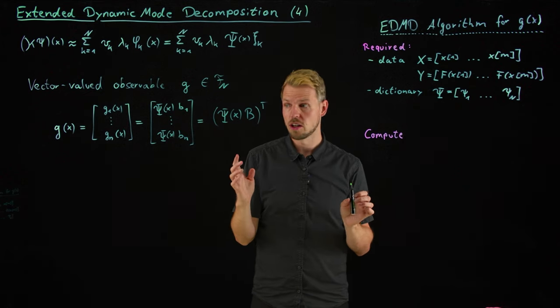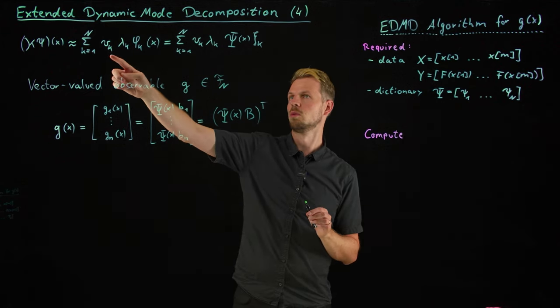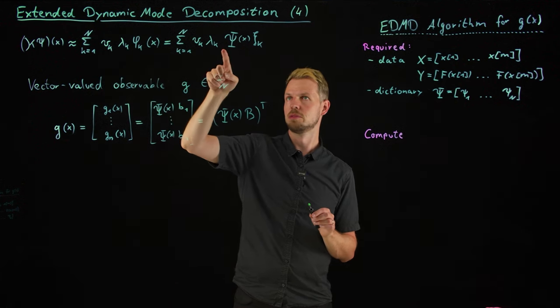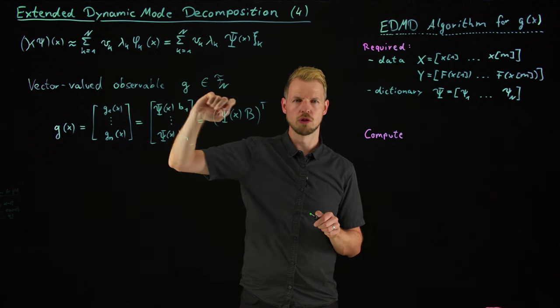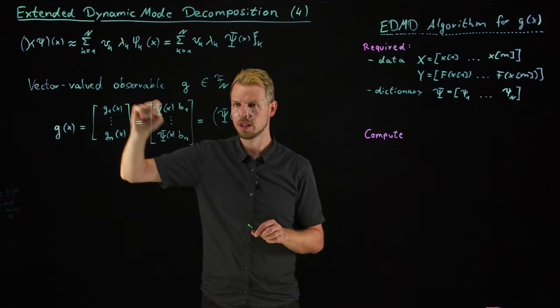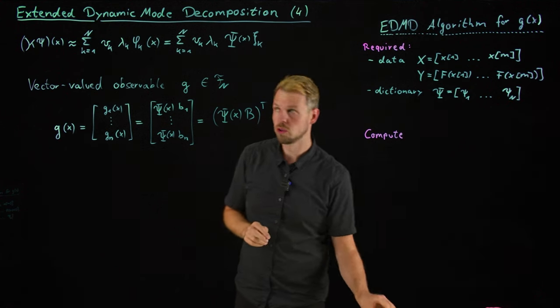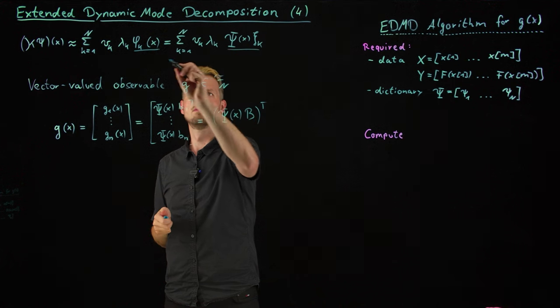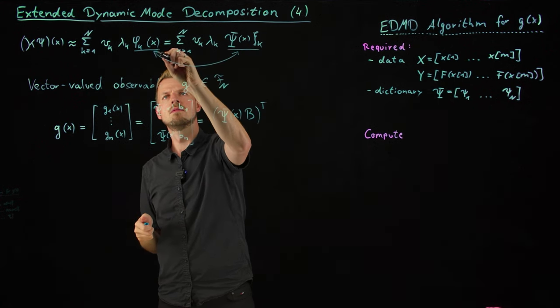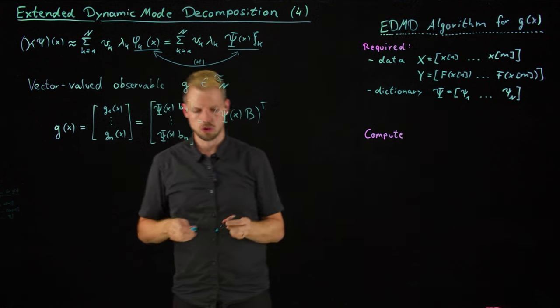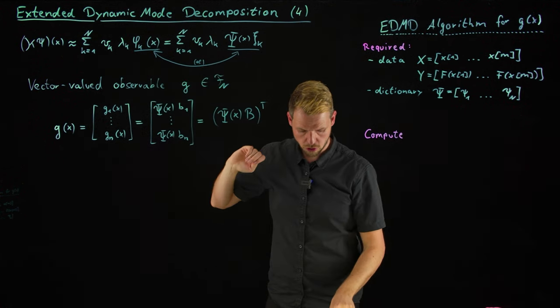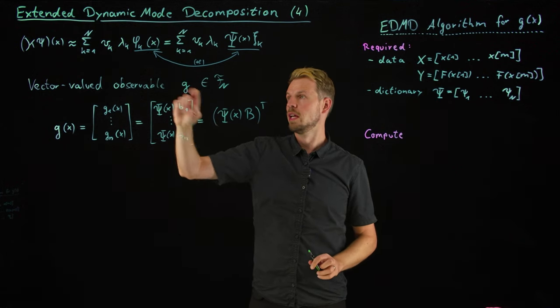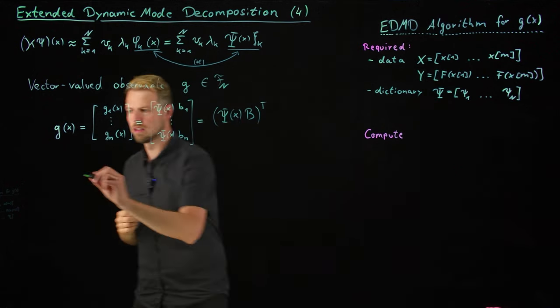So we have started out with the question of how to get the Koopman modes. We know we get the lambda and we get the phi via psi using the eigenvalue decomposition of our K matrix. So what about the V? What I'm going to do now is use this definition in a matrix form to derive an expression for V.